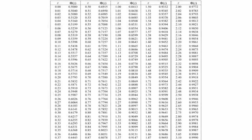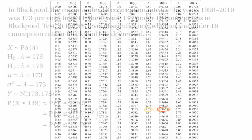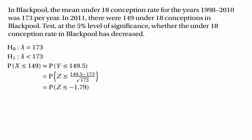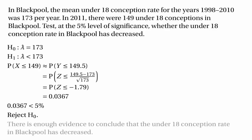Looking up positive 1.79 in tables, the probability that z is less than or equal to 1.79 is 0.9633. But we want the probability that z is less than or equal to minus 1.79, so we compute 1 minus 0.9633, giving 0.0367. Since 0.0367 is less than 5%, we reject the null hypothesis. In context, there is enough evidence to conclude that the under-18 conception rate in Blackpool has gone down.